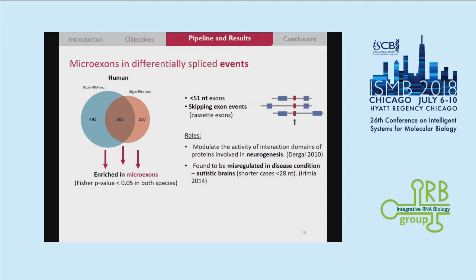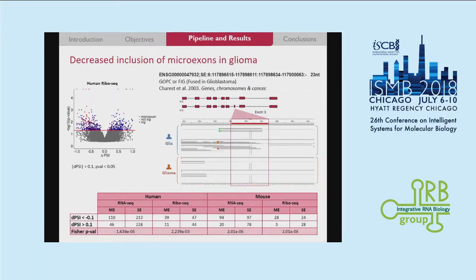In these changes that were significantly changing in both RNA-seq and ribo-seq, we have observed an enrichment of microexons. Microexons are short skipping exon events, shorter than 51 nucleotides, that have been found to have a role in neurogenesis and neuronal differentiation and also to be misregulated in disease conditions, more precisely in autistic brains. Since we have glioma data, we thought it was interesting to look at the behavior of these microexons. We observed a decreased inclusion of microexons in glioma — microexons represented by red dots show a bias towards negative delta PSI values, indicating negative inclusion. We tested it against longer skipping exon events and it appeared to be significant.